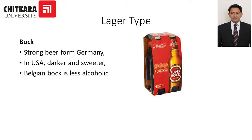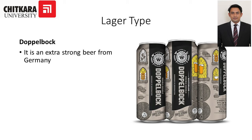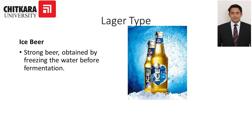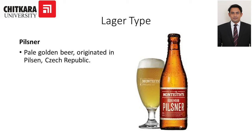Coming to the lager types: first we have bock — a strong beer from Germany; in the USA it is darker and sweeter. Belgian bock is less alcoholic. Double bock is an extra strong beer from Germany. Ice beer is a strong beer obtained by freezing the water before fermentation. Then we have pilsner — a pale golden beer that originated in Pilsen, Czech Republic.